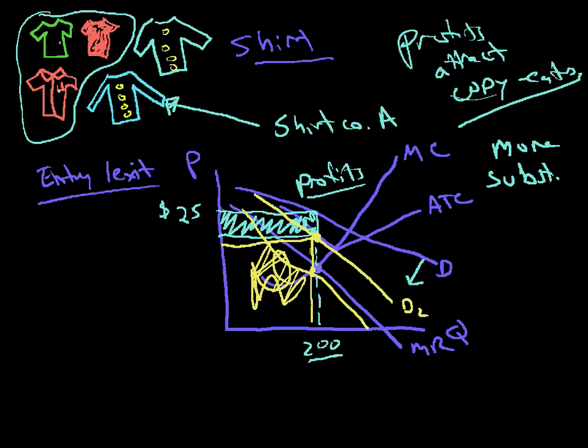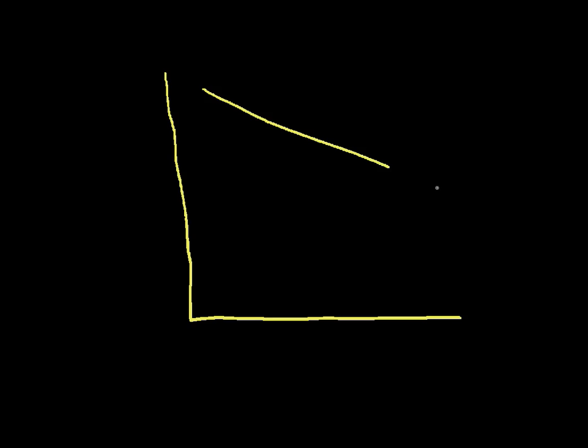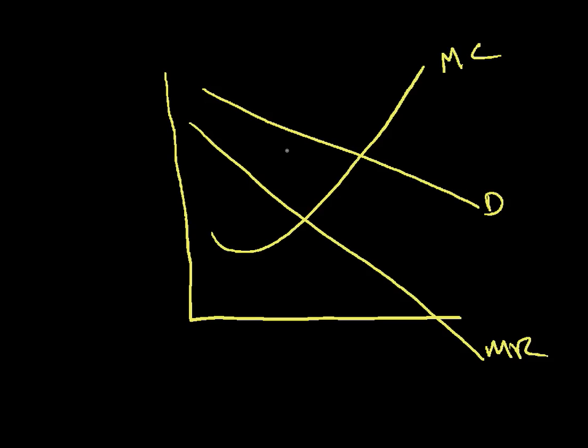Let's try drawing that again. Here's it in blown up view. Sorry about that. Here's the blown up view of this. You have the basic demand, marginal revenue, marginal cost, average total cost shirt company.